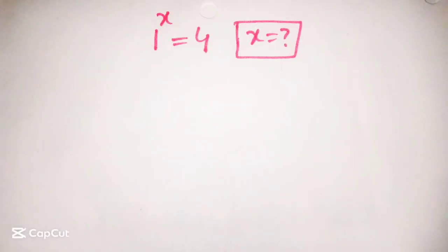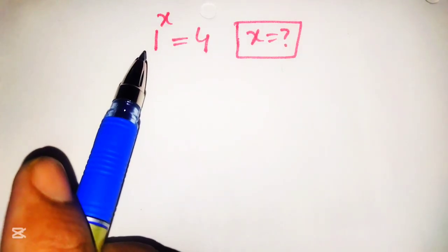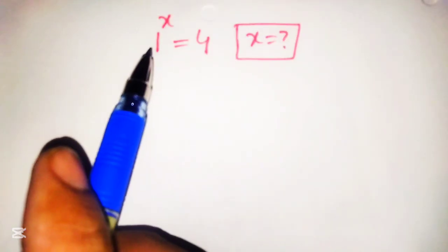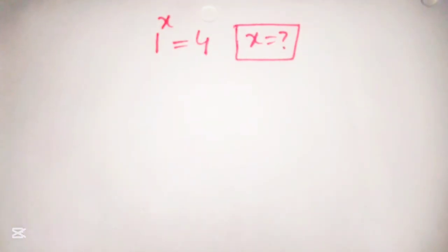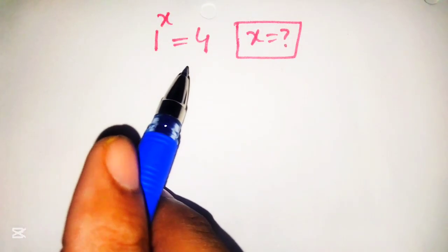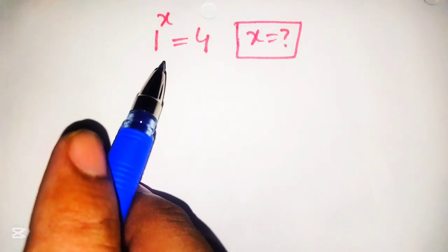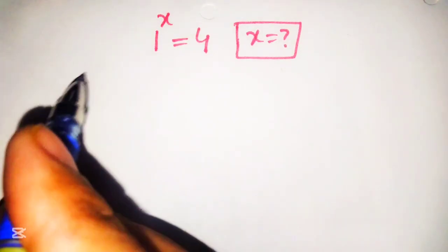Hello guys, welcome to my YouTube channel. Today we are going to solve a very interesting exponential equation which is given as 1 raised to power x is equal to 4. From this given equation we can see that it is not possible, and with simple mathematics we can prove it as well.